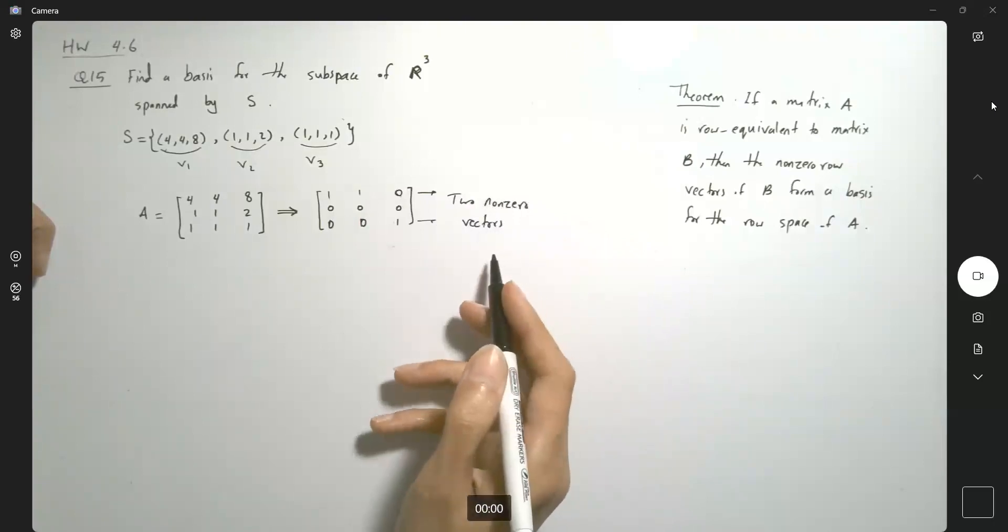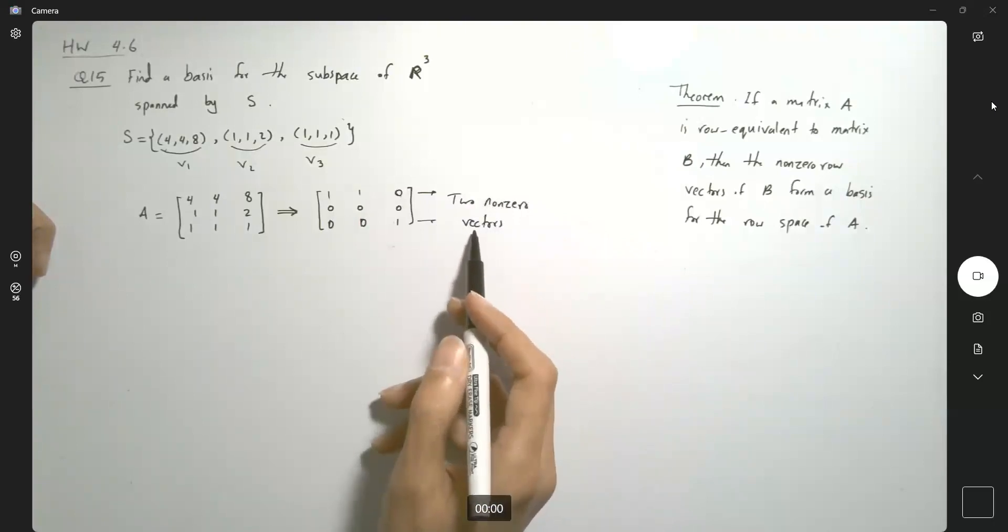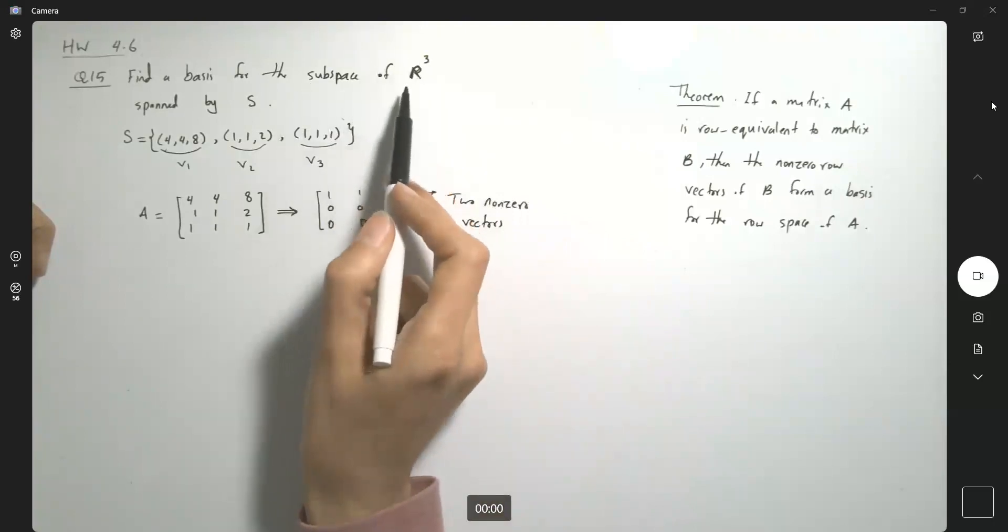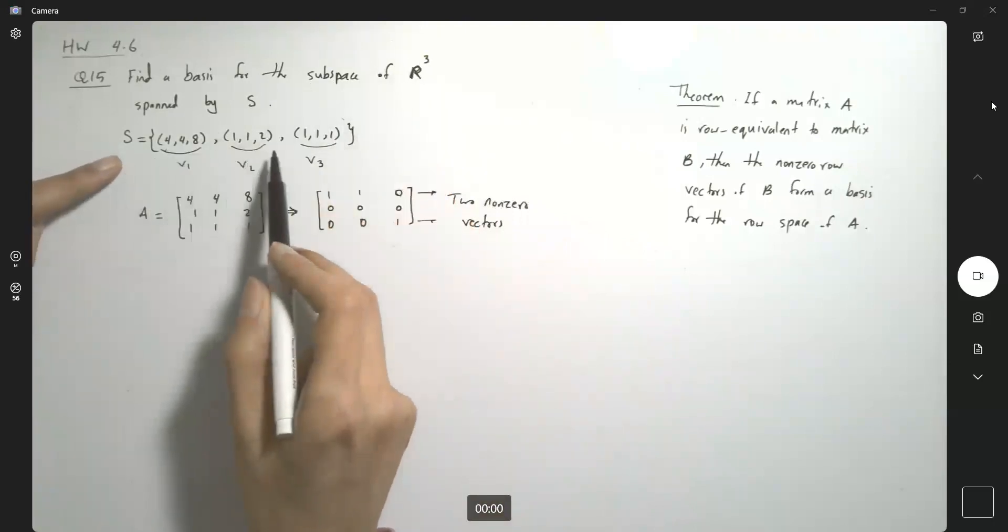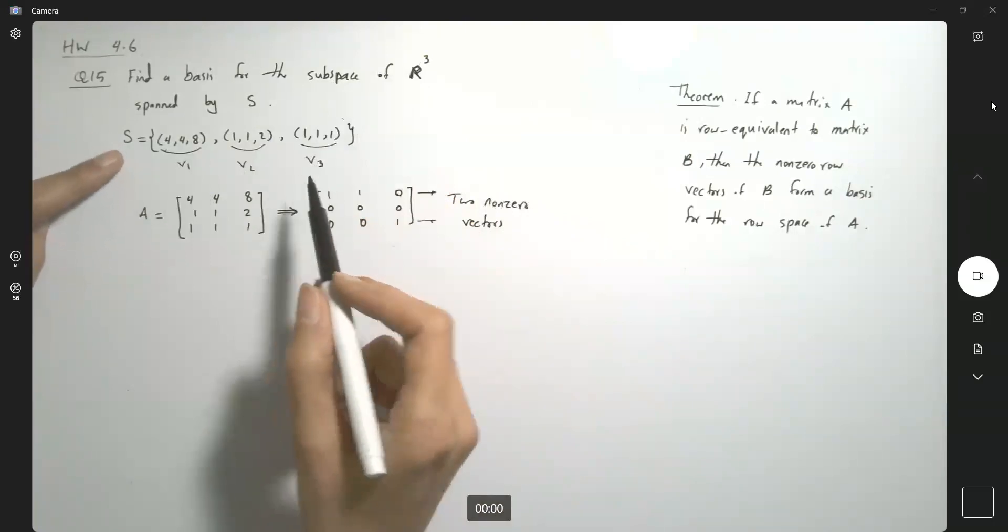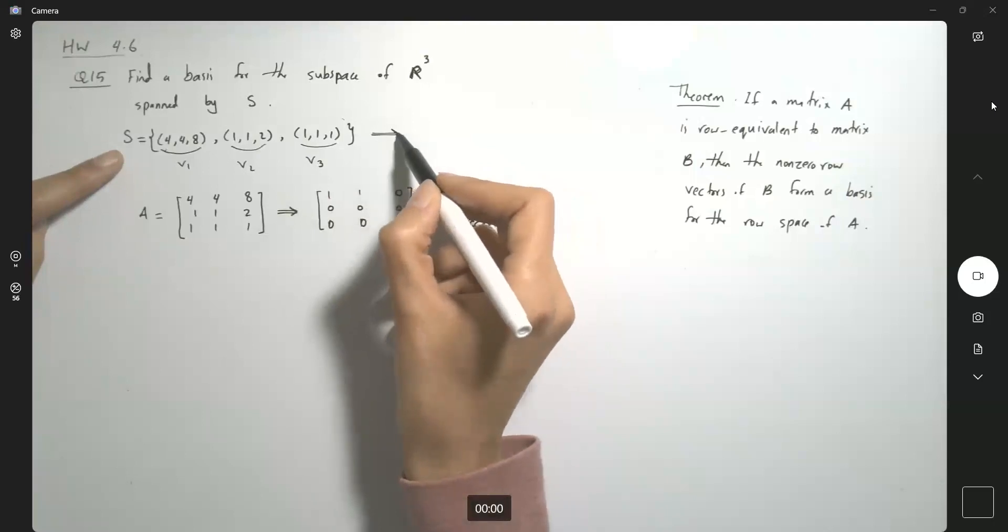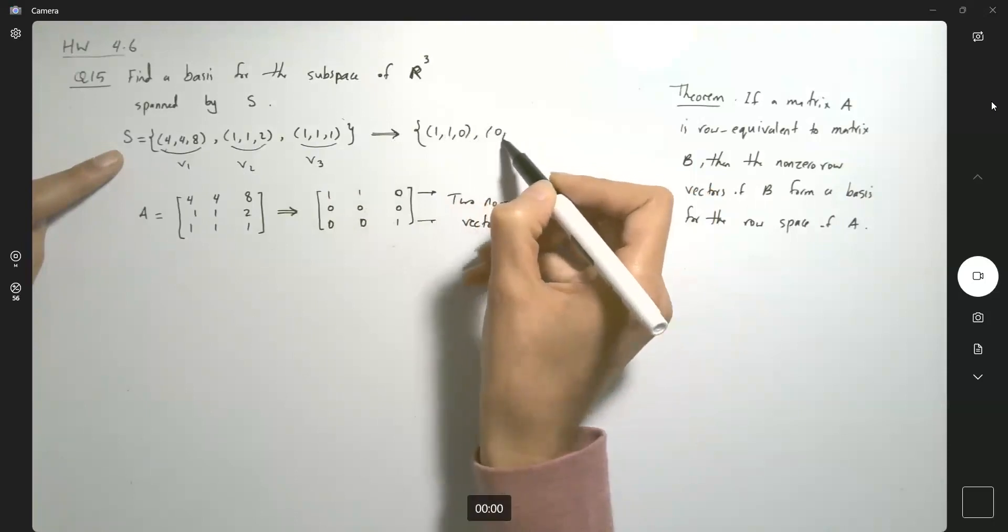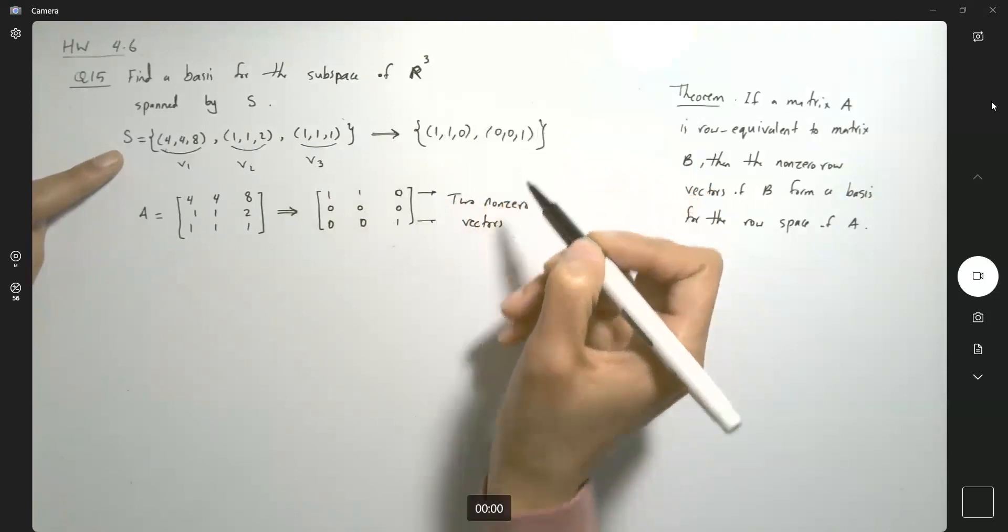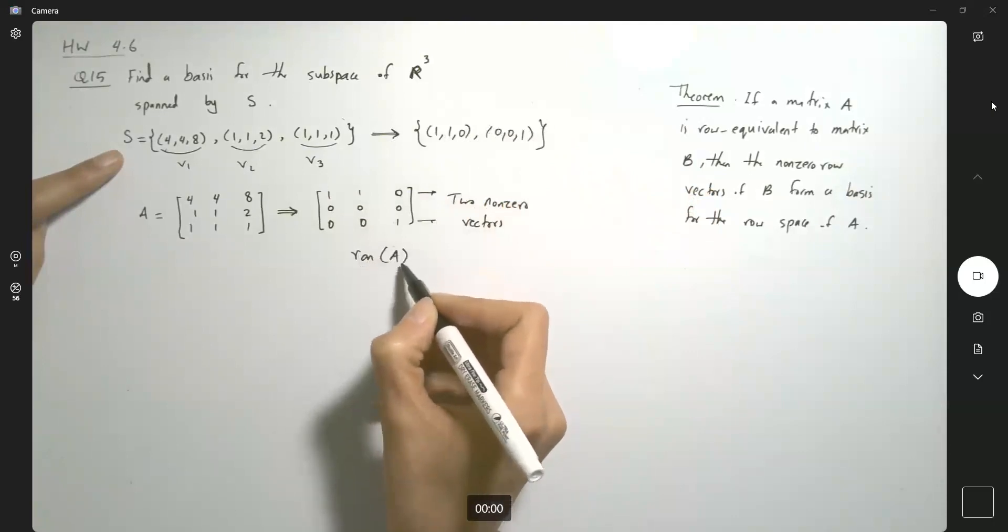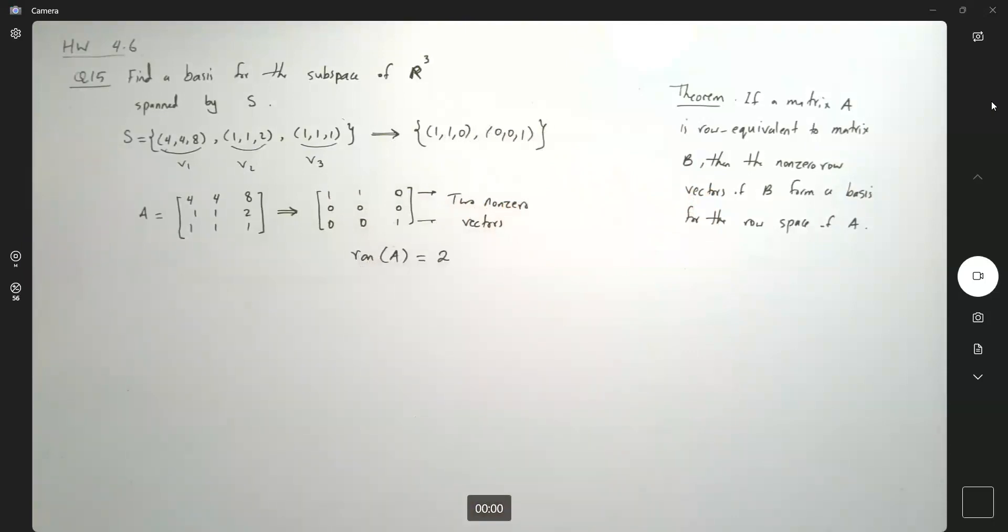So what's the meaning of that? It means that the subspace of the space that is spanned by this set can be actually spanned by this set: (1, 1, 0) and (0, 0, 1). So the rank is going to be just two.